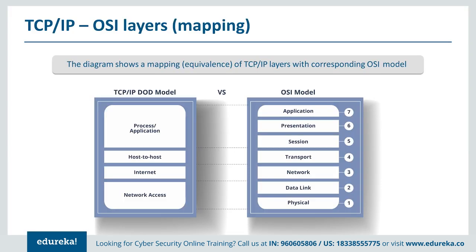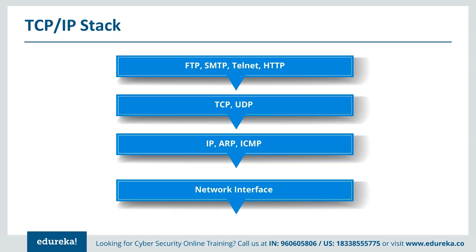TCP/IP model vs. OSI model: in TCP/IP, the top four OSI layers are combined into one application layer. The network layer becomes the 'internet layer', and the transport layer is called 'host-to-host'. The top three OSI layers (application, presentation, session) become the 'process/application layer'. Protocols used: the application layer uses FTP, SMTP, Telnet, HTTP, etc. The host-to-host layer uses TCP and UDP. The internet layer uses IP, ARP, and ICMP. The network interface layer handles physical connectivity.